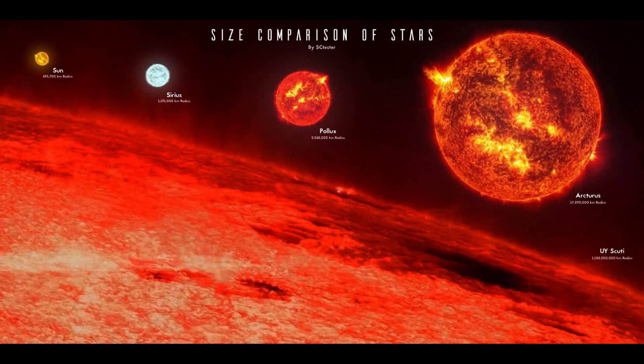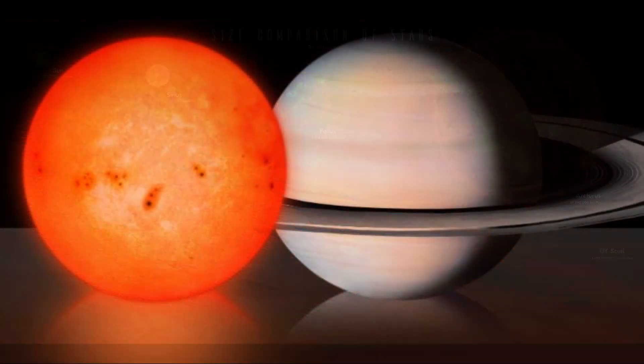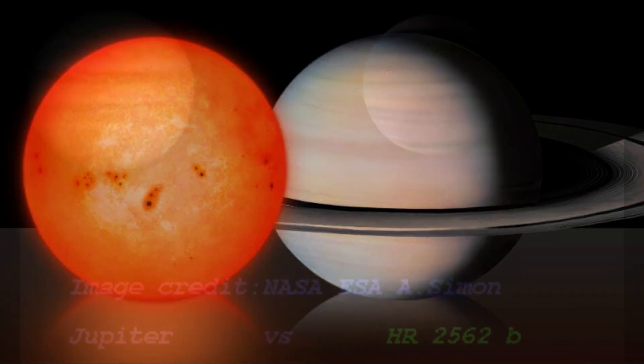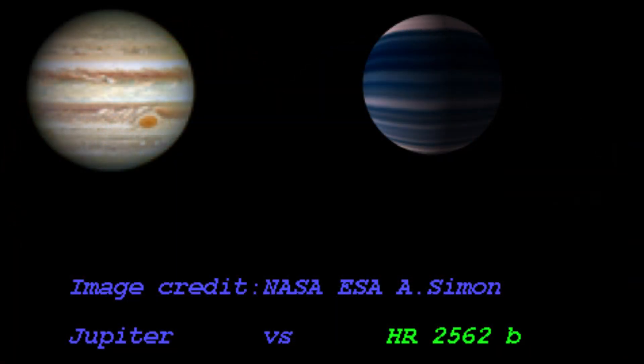The largest known star, UY Scuti, is over 1,700 times larger than the Sun. The smallest known star, EBLM J0555-57Ab, is only slightly larger than Saturn.